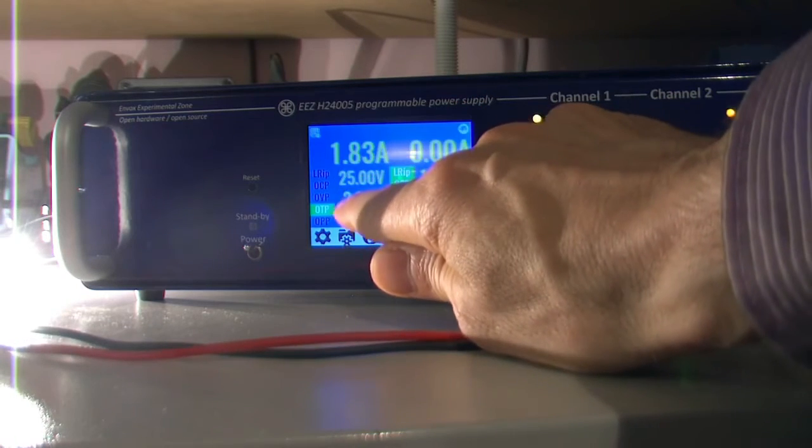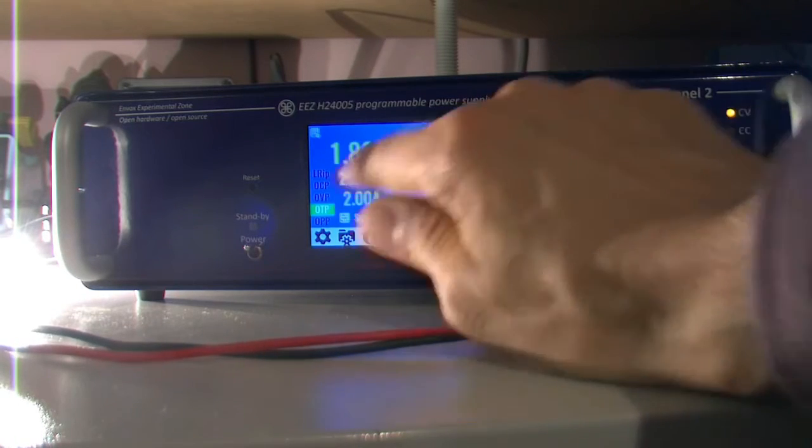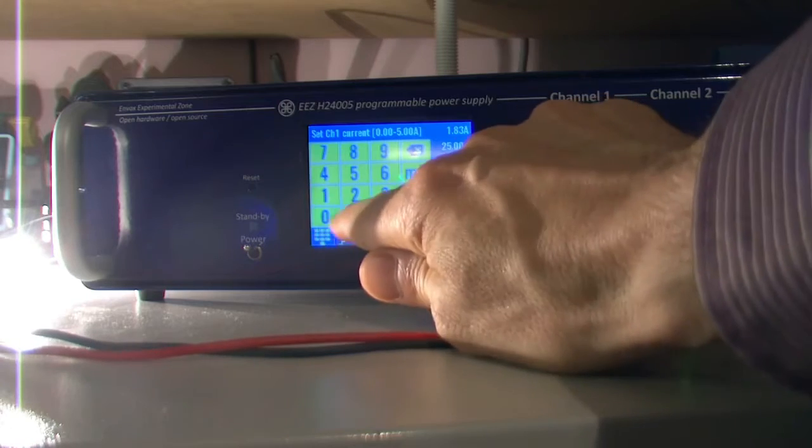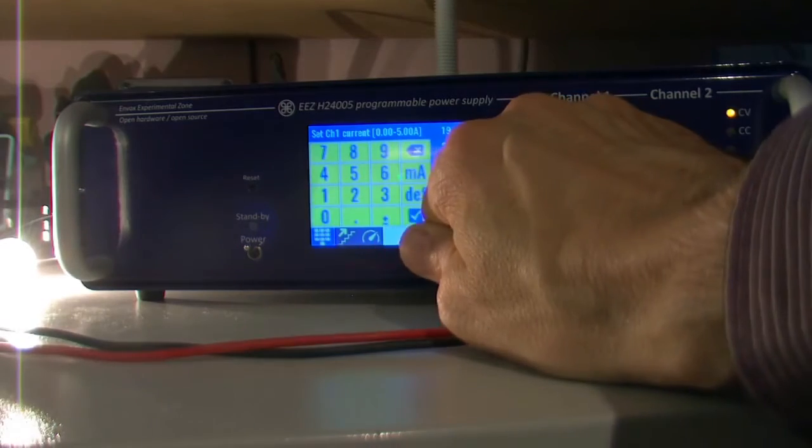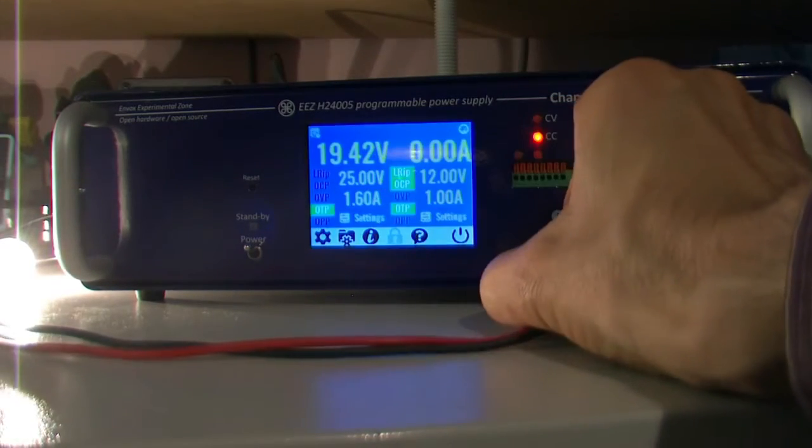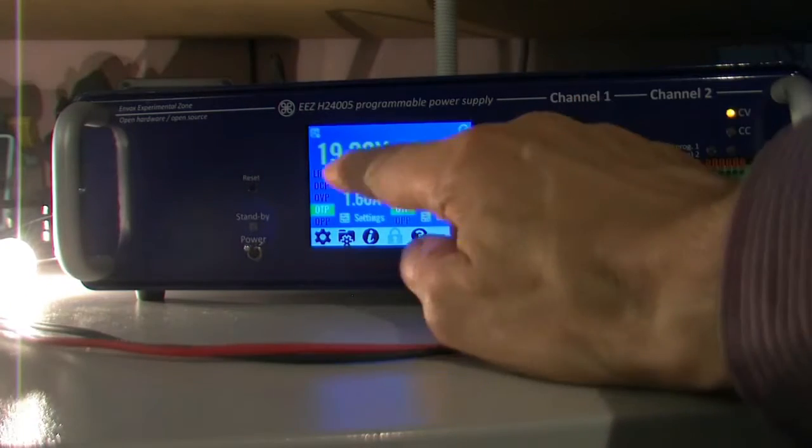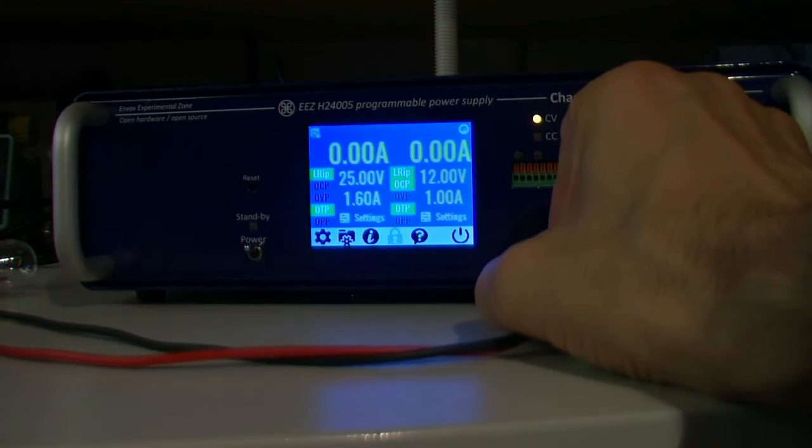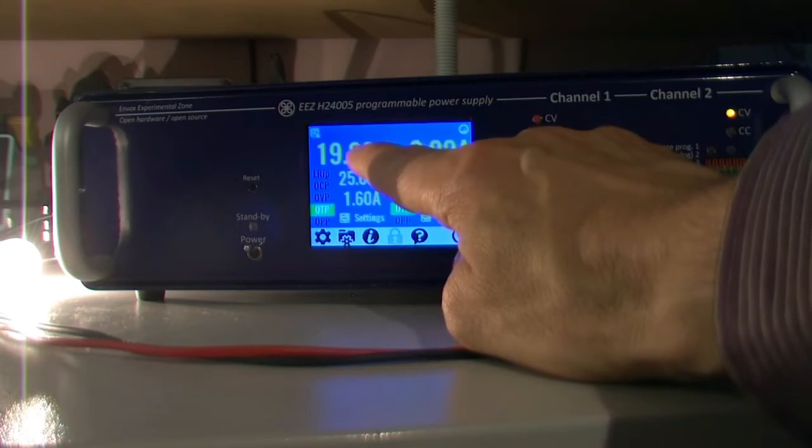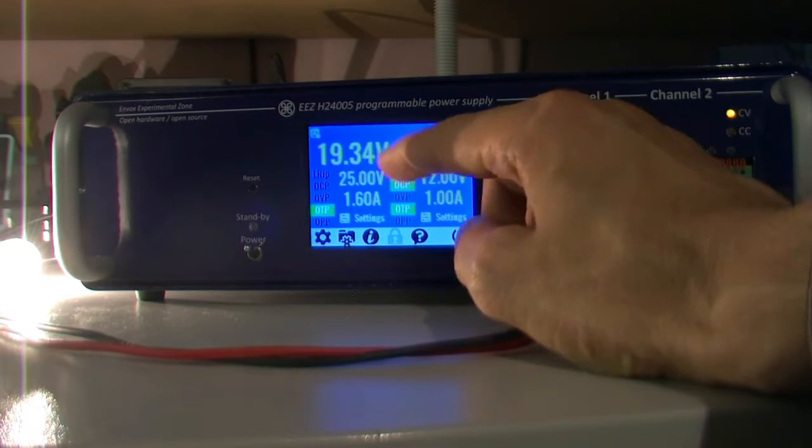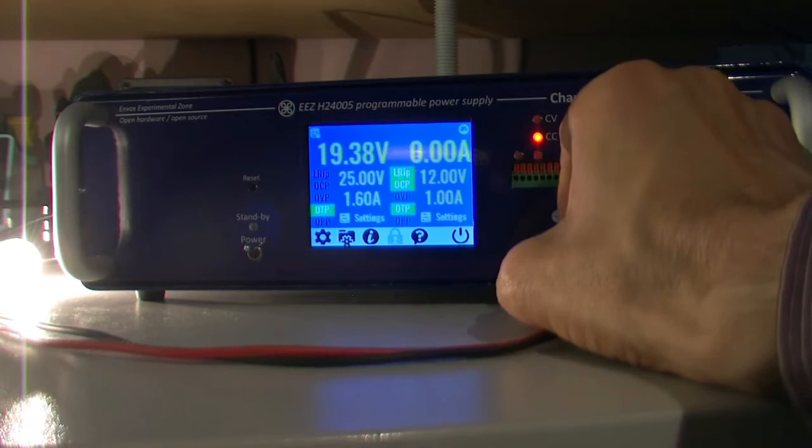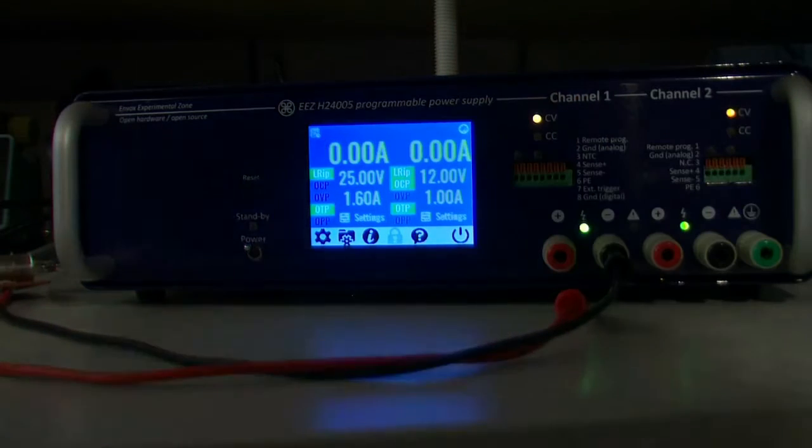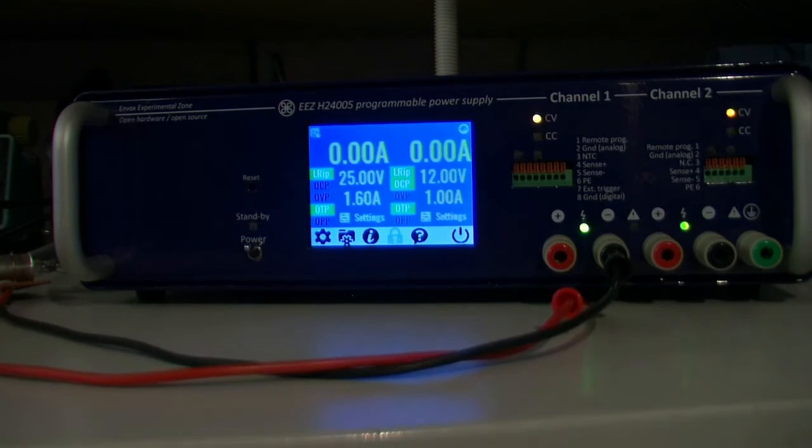It's in constant current, constant voltage. If we limit it, okay it drops down there, but we don't actually know what is going on or how we came to that 19 point something volts.